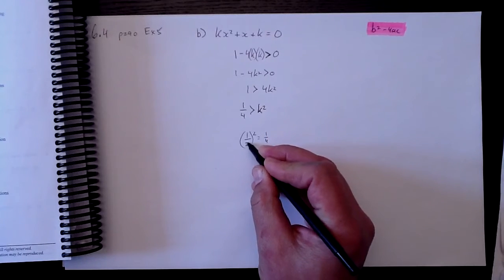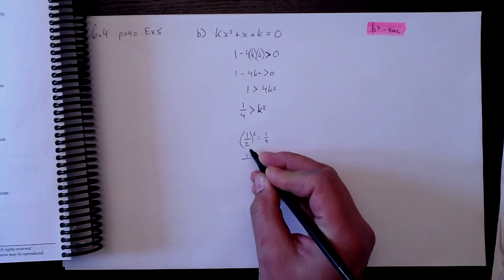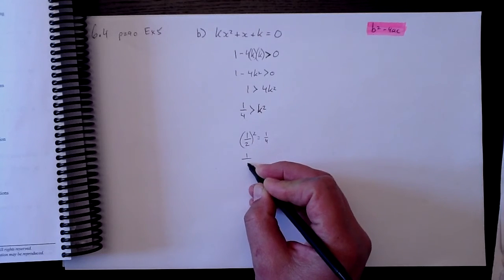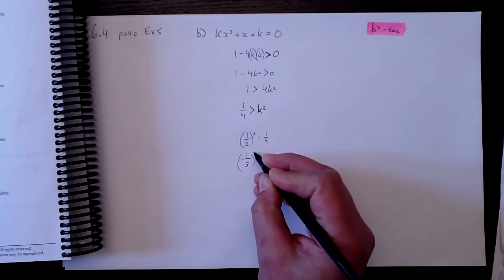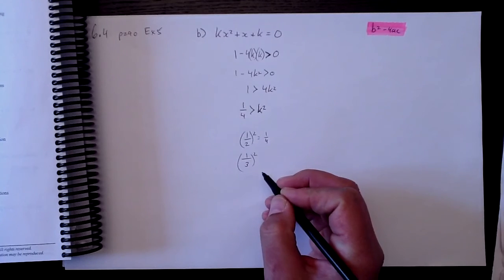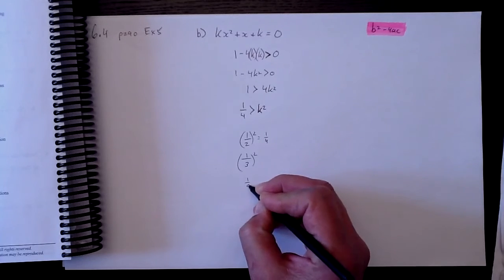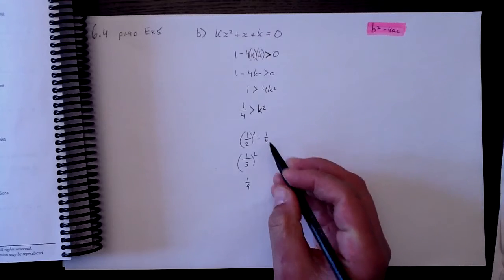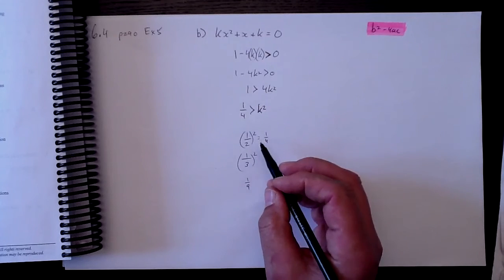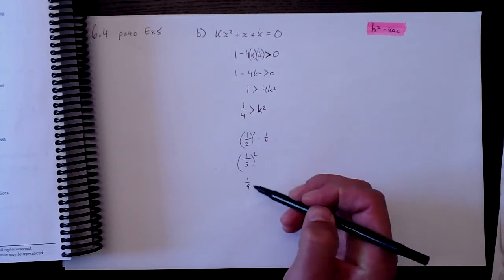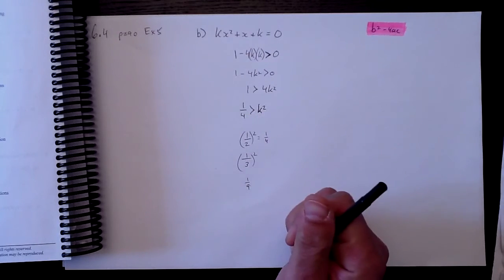So if this was, let's say this was larger, if I went down to 1 third squared, well, 1 third squared would give me 1 over 9. And the question is, then, if k was 1 third, k squared would be 1 ninth. And is 1 ninth smaller than 1 quarter? Yes, it is.